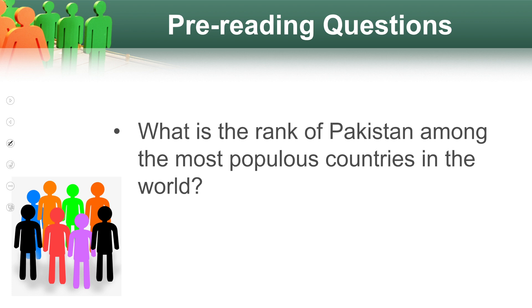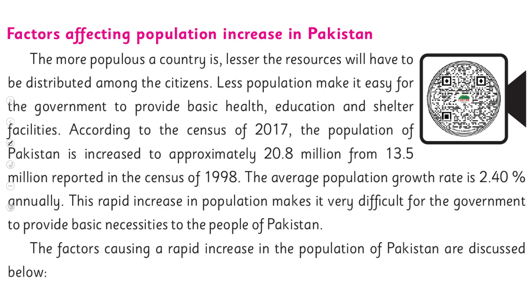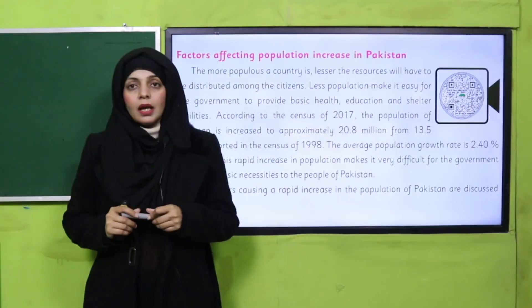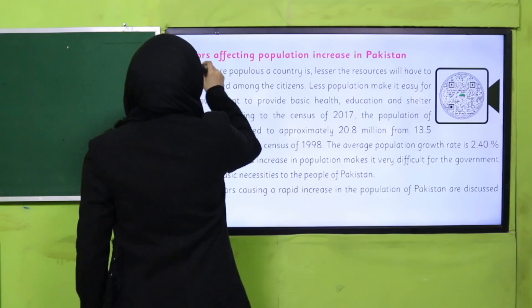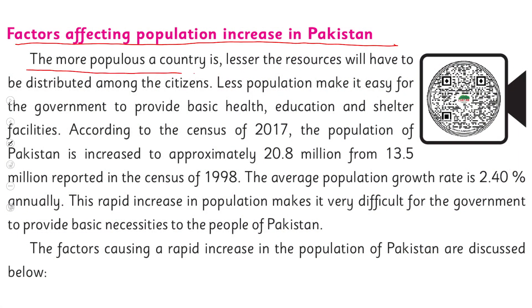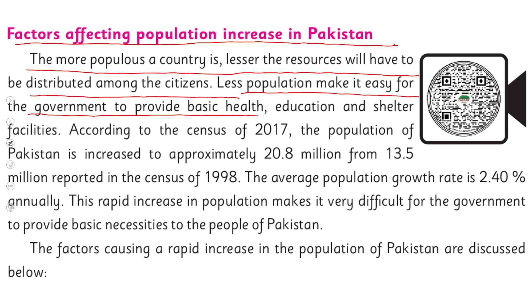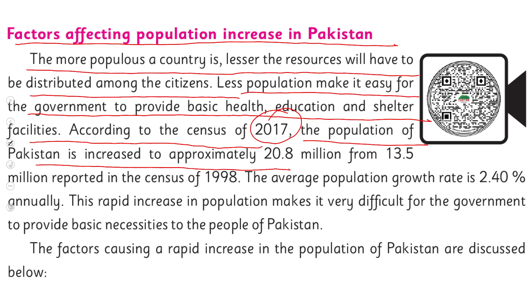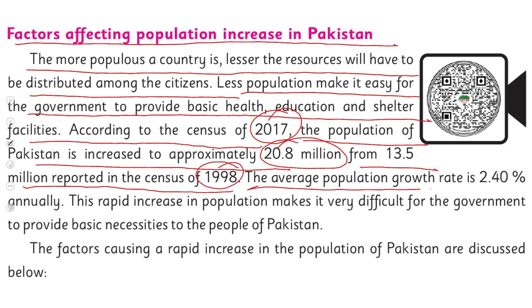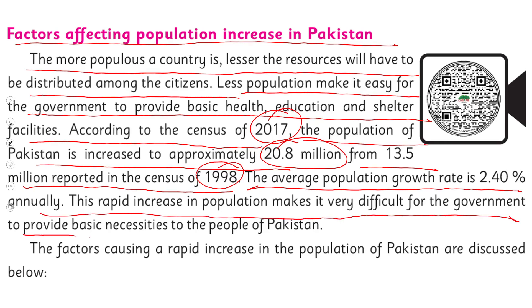Let's get started. Open the page on unit number five — 'Factors Affecting Population Increase in Pakistan.' The more populous a country is, the lesser the resources will have to be distributed among the citizens. Less population makes it easy for the government to provide basic health, education, and shelter facilities. According to the census of 2017, the population of Pakistan increased to approximately 20.8 million from 13.5 million reported in the census of 1998. The average population growth rate is 2.40% annually.